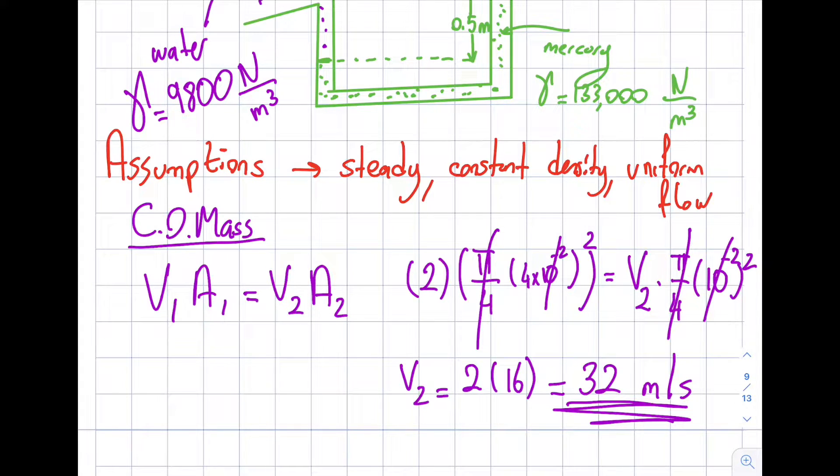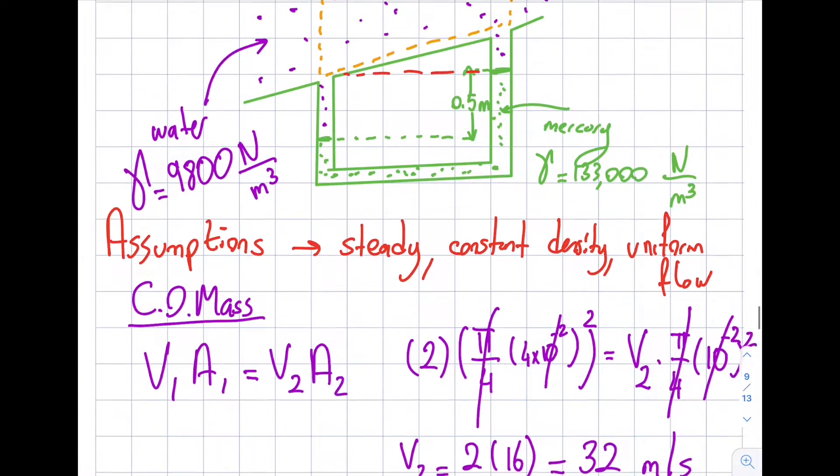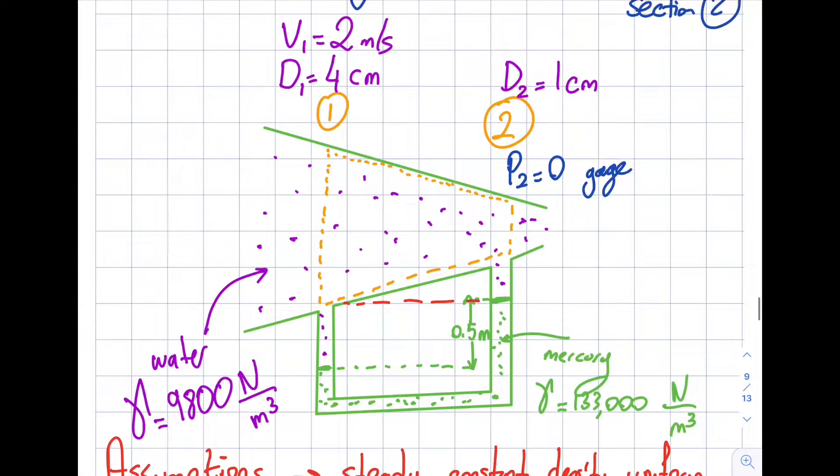So I know now my second velocity over here. The velocity does increase. Does this make sense? Oh yeah, it does, the area gets smaller, so the velocity has to get larger.